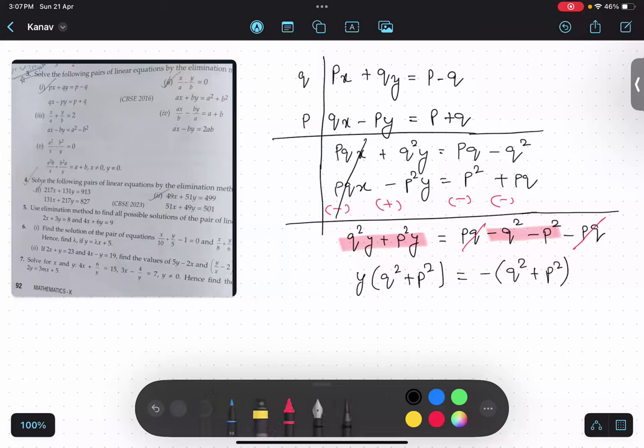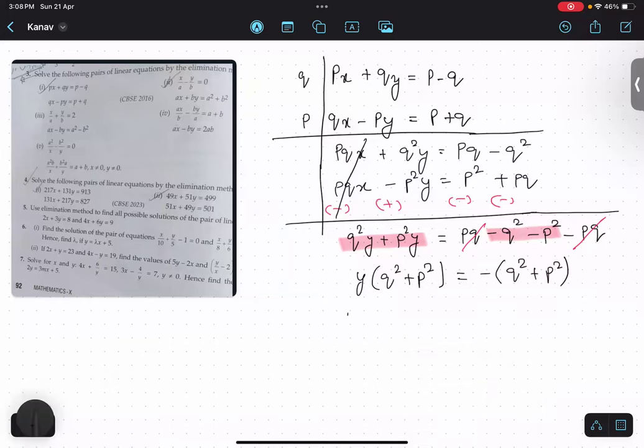Now I will shift everything other than y. Remember, over here x and y are the variables. Other things like p, q, a, b all are arbitrary constants. They are not looking like constants but they are constants. So minus q square plus p square upon q square plus p square. I can cancel them because they are fully in bracket and exactly same.